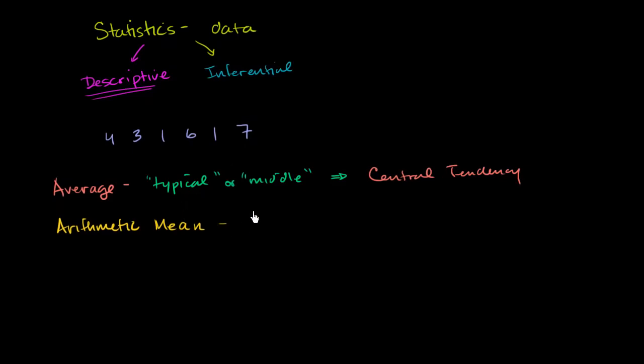Well, let's just compute it. It's going to be 4 plus 3 plus 1 plus 6 plus 1 plus 7 over the number of data points we have. So we have 6 data points. So we're going to divide by 6. And we get 4 plus 3 is 7, plus 1 is 8, plus 6 is 14, plus 1 is 15, plus 7 is 22.